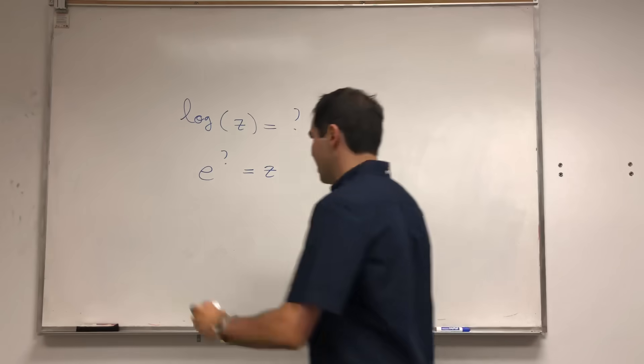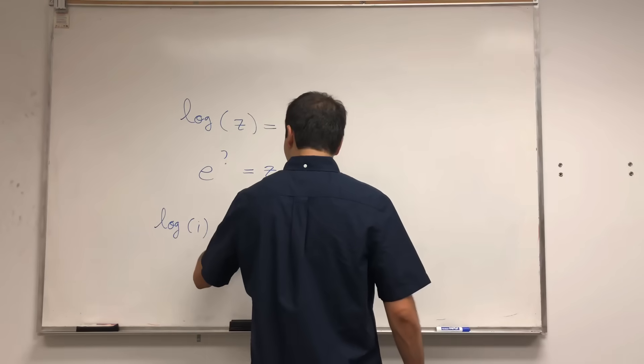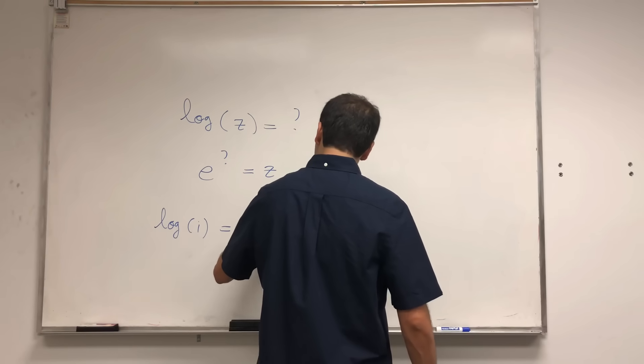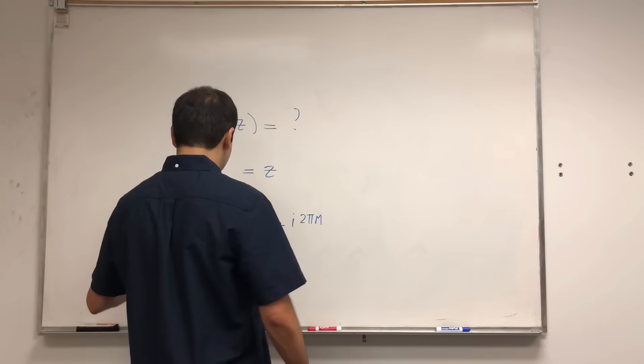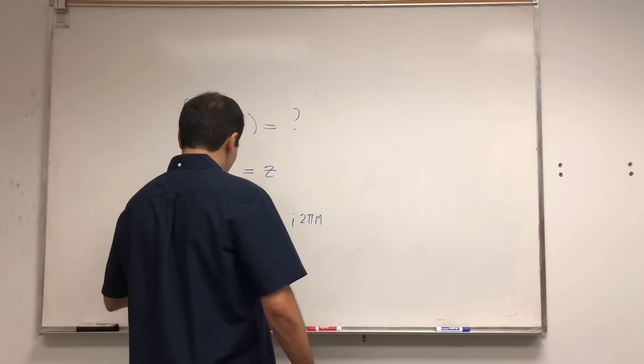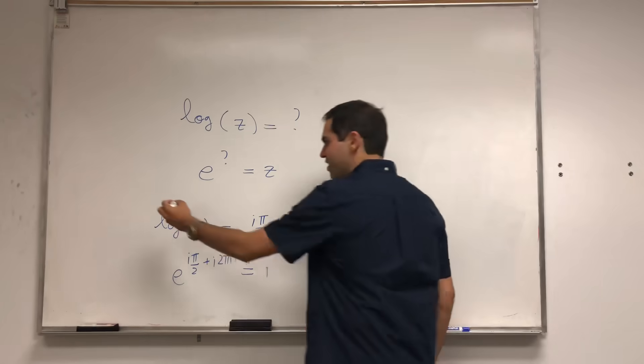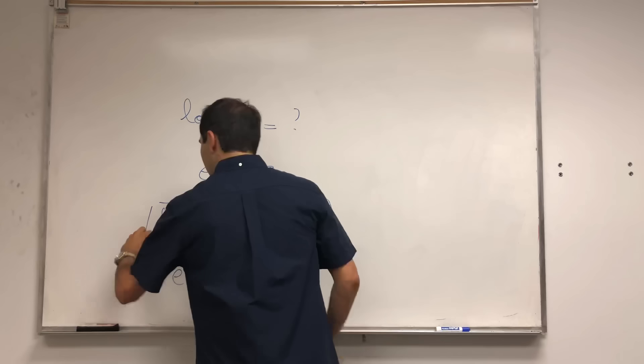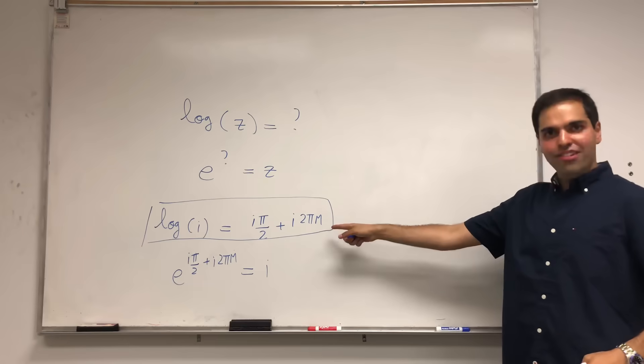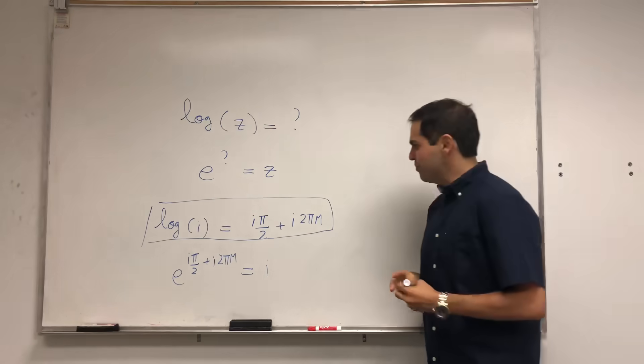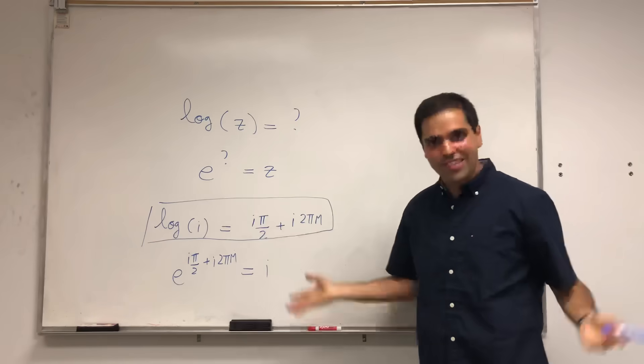Which means in this case, that log of i, right, that equals to iπ/2 + i2πn. Because we get e to the iπ/2 + i2πn equals to i. And this log with a little l, it's what's called a multi-valued function, because it has different values, one for each n.